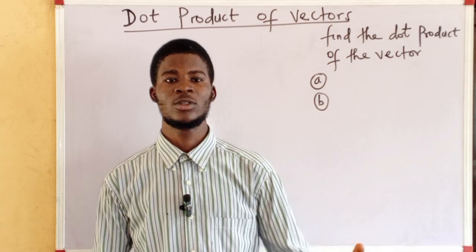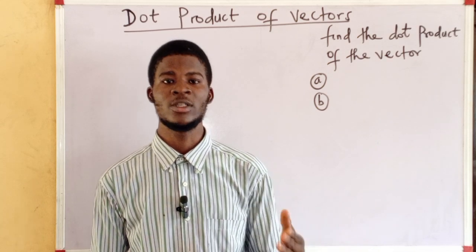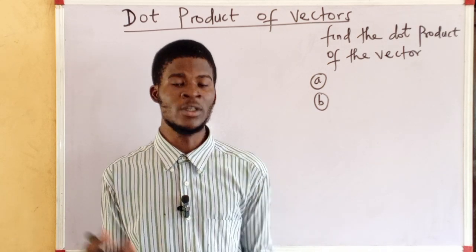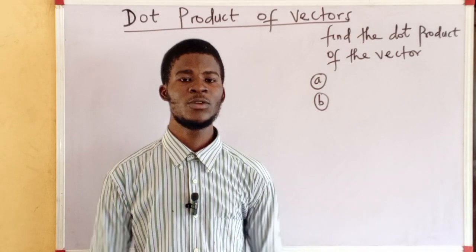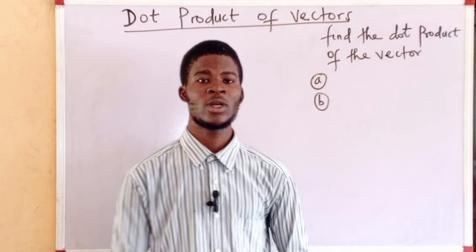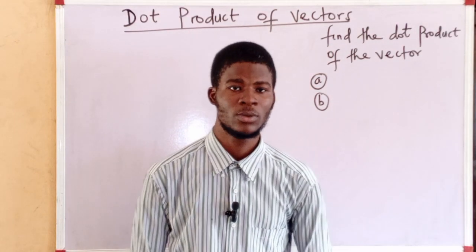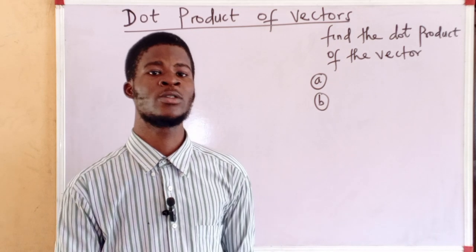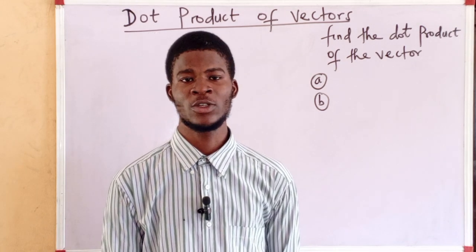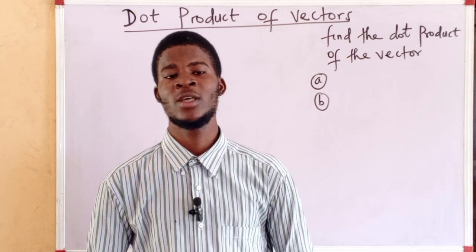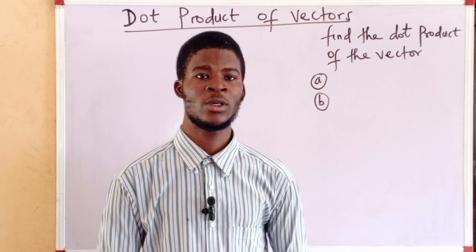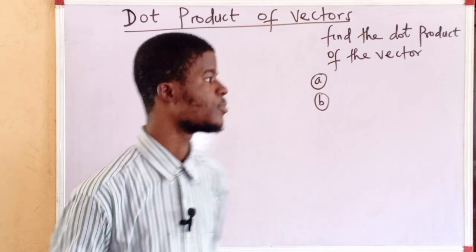A scalar product results in a scalar. A vector product results in a vector. In this video we'll talk about dot product. We're also going to talk about vector product later, so subscribe and turn on notifications to get updated whenever videos come up in the future. Now let's talk about dot product.